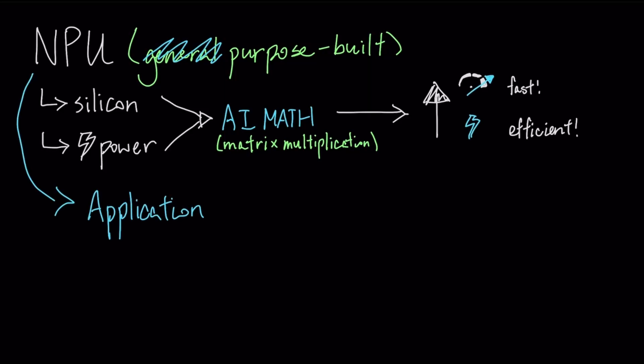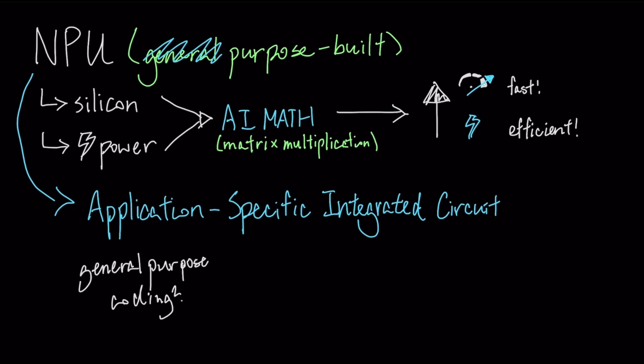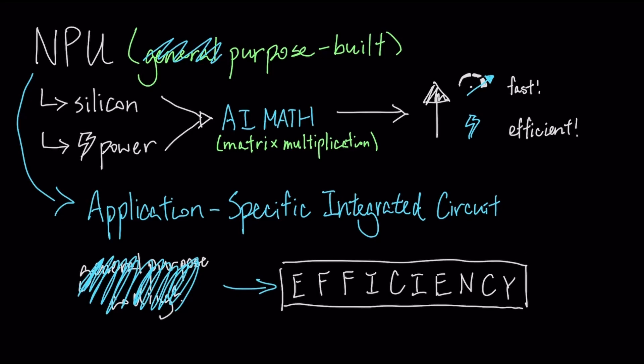An NPU is an application-specific integrated circuit that sacrifices general-purpose programmability for fixed-function hardware, enabling extreme efficiency for one specific job. And that one job is being a hyper-efficient factory for matrix multiplication.